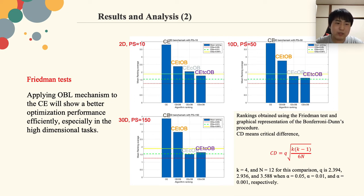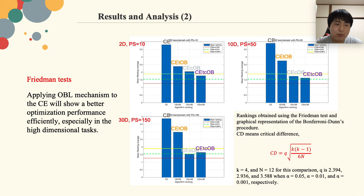All proposed algorithms present better performance than the conventional chaotic evolution algorithm. After obtaining the average mean rank of each algorithm from Friedman tests, we also applied the Bonferroni-Dunn tests at significant levels of different alpha values on the 2-dimensional, 10-dimensional, and 30-dimensional benchmark functions. With the help of the critical difference lines used in the figures, we can observe that our proposed algorithms are more significant in higher-dimensional problems, especially CETCOB.